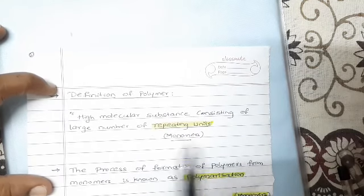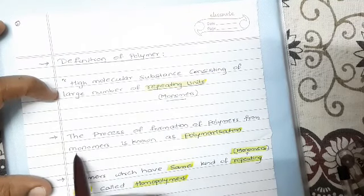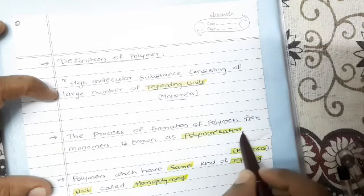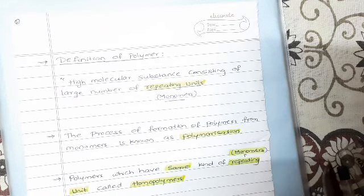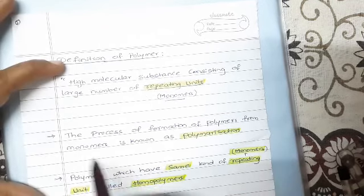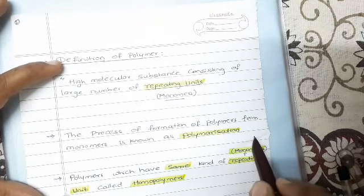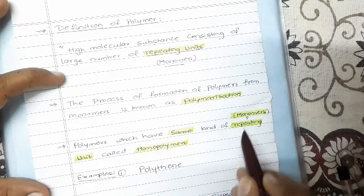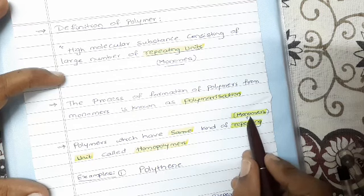This is the definition of polymer. The process of formation of polymers from monomers is known as polymerization. Polymers which have the same kind of repeating units — the monomers are the same kind — that type of polymer we call homopolymers.